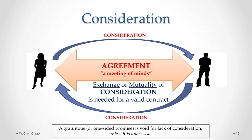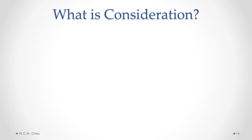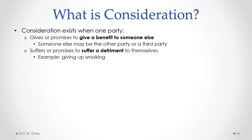However, there is one exception: if a gratuitous promise is made under seal, it is a valid contract. We'll talk further about what a seal is later in this module. From a legal standpoint, consideration has a specific legal meaning — forget about the ordinary meaning. Consideration is said to exist when one party gives or promises to give a benefit to someone else. Alternatively, consideration can exist where someone suffers or promises to suffer a detriment to themselves — for example, if someone promises to give up smoking in exchange for a promise from someone else to pay them a certain amount of money.